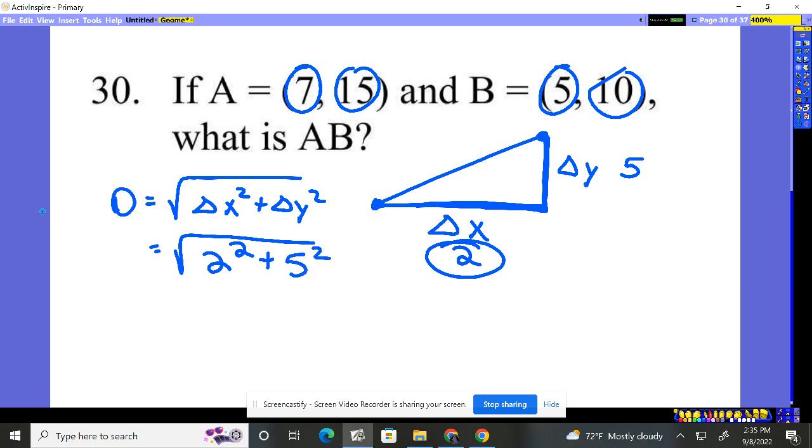So we have 4 plus 25, square root of 29. That's the exact answer. Once we take it on the calculator, that's going to give us about 5.3. So we'll just round our answer and say it's about 5.3.